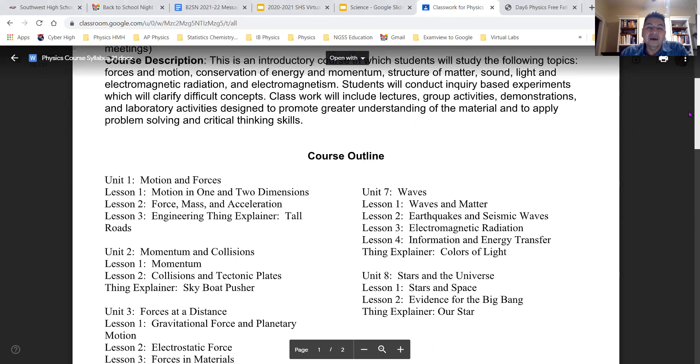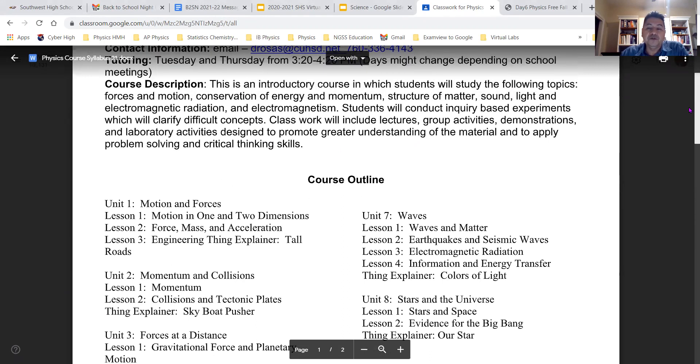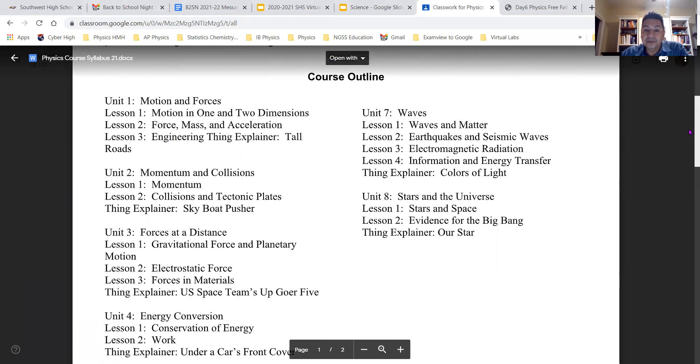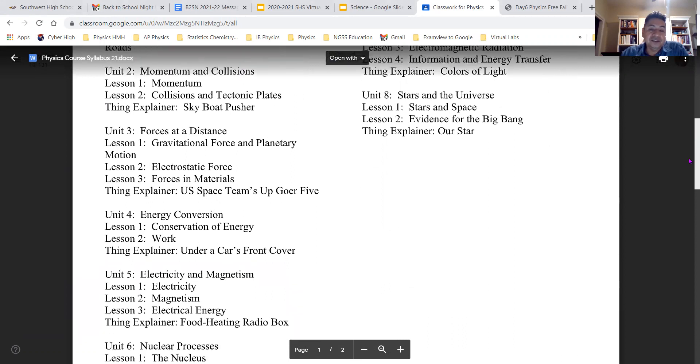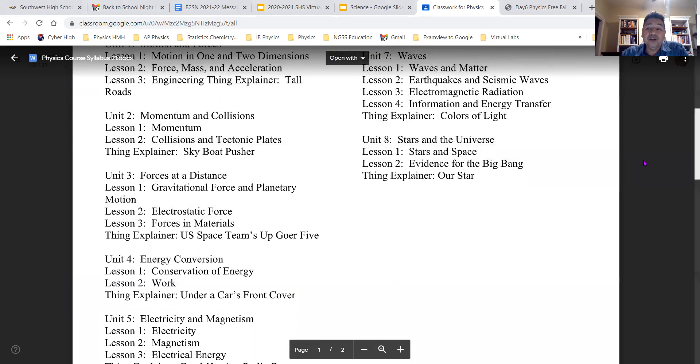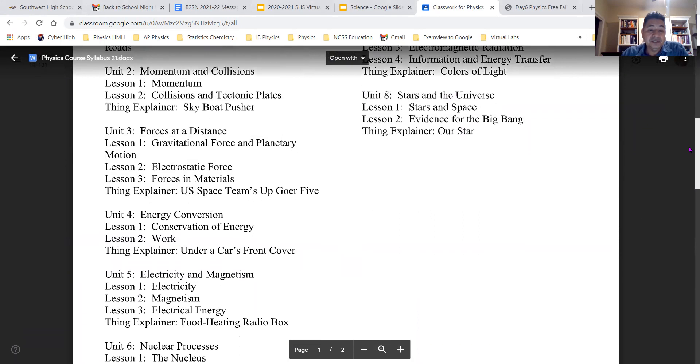And here is the course description. This is from the publisher. This is what we're going to cover in our physics class. And so there are no surprises. Those are the exact units of the book. We might not be able to make it to unit eight. It seems to be a lot of material, but just so that you know.